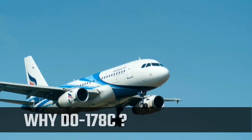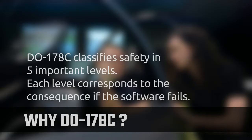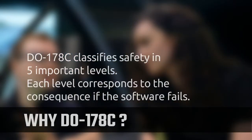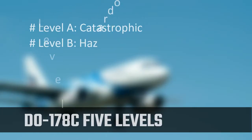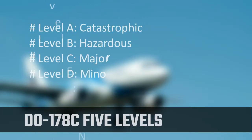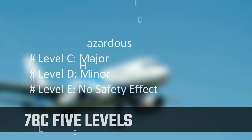Why is DO-178C needed? Because DO-178C helps to make flying safer. DO-178C classifies safety in five important levels, and each level corresponds to the consequence if the software fails: Level A — Catastrophic; Level B — Hazardous; Level C — Major; Level D — Minor; Level E — No Safety Effect.